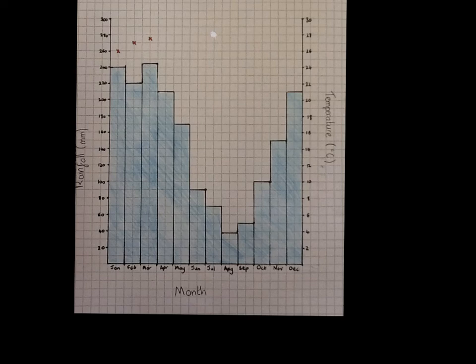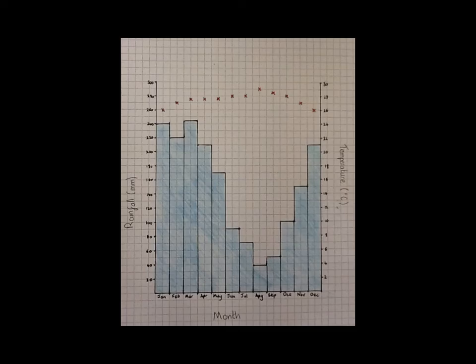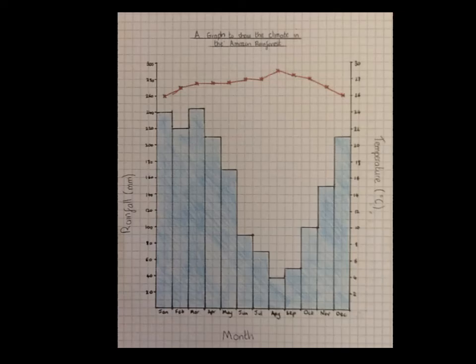It is important to remember that when plotting the temperature, we're using the temperature axes along the right-hand side rather than the left-hand axes, which has the rainfall scale. You can then continue to plot all of the temperatures across the whole year and then join up all of the points of your line graph using a red pen or pencil.